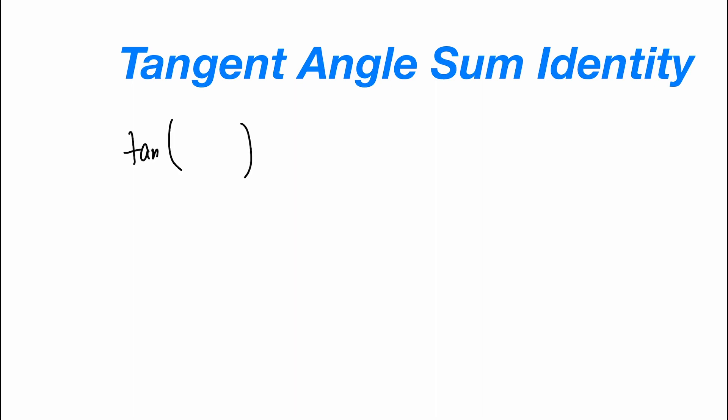Hello everyone, and welcome to another episode of Interstigation. In today's episode, I will go over the tangent angle sum identity, which basically expresses the tangent of two angles added together — let's call them alpha and beta — in terms of tangent alpha and tangent beta.